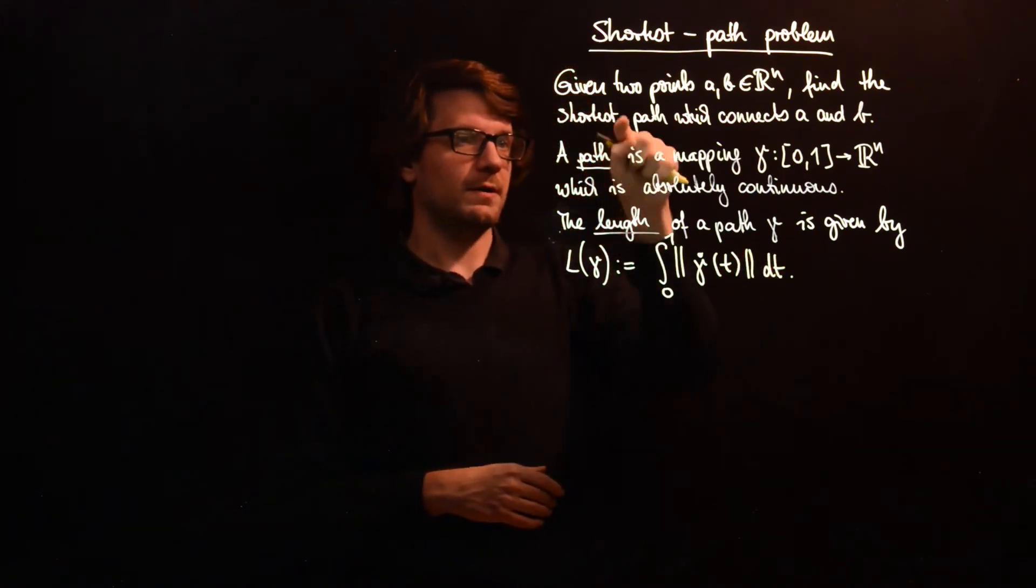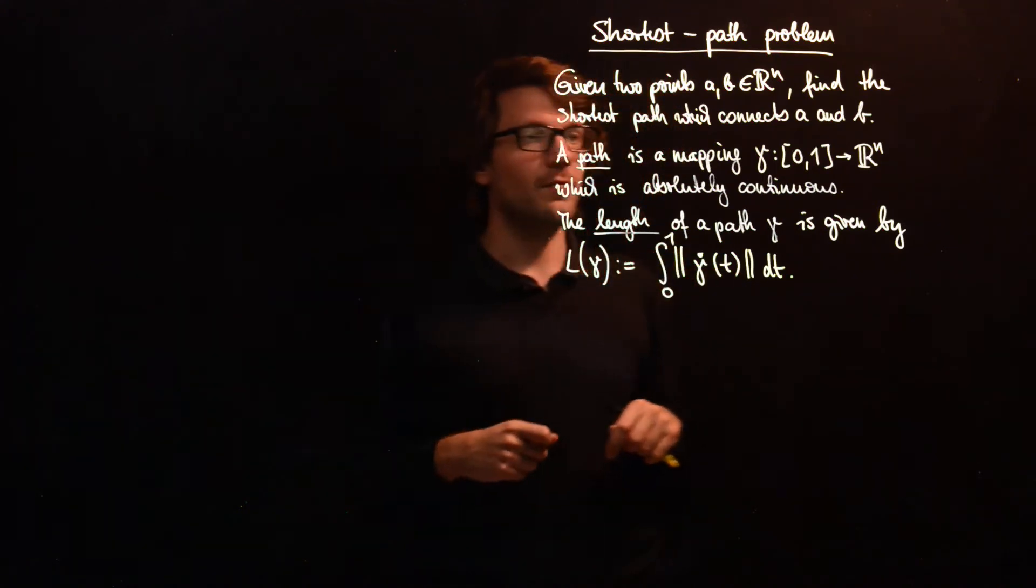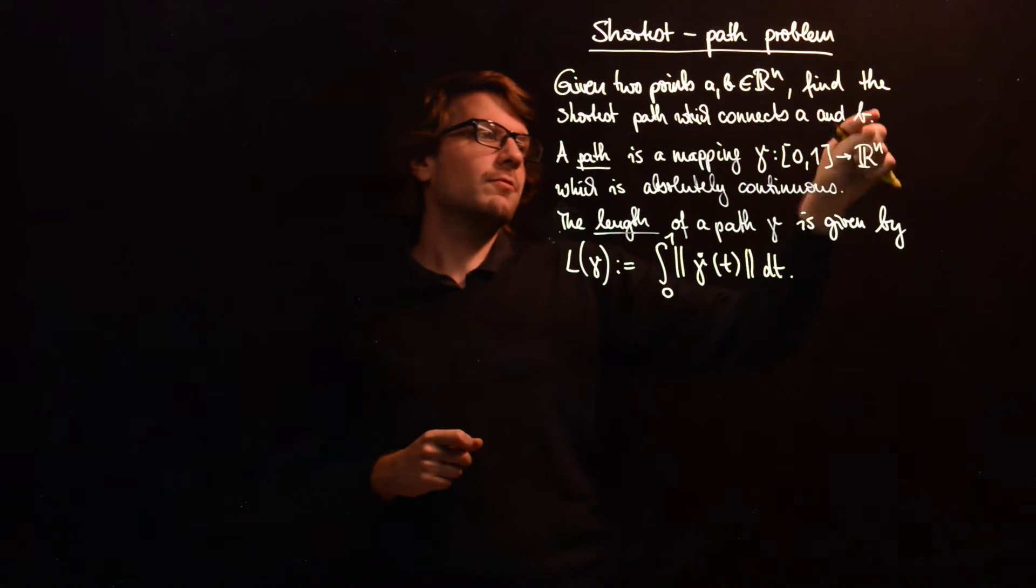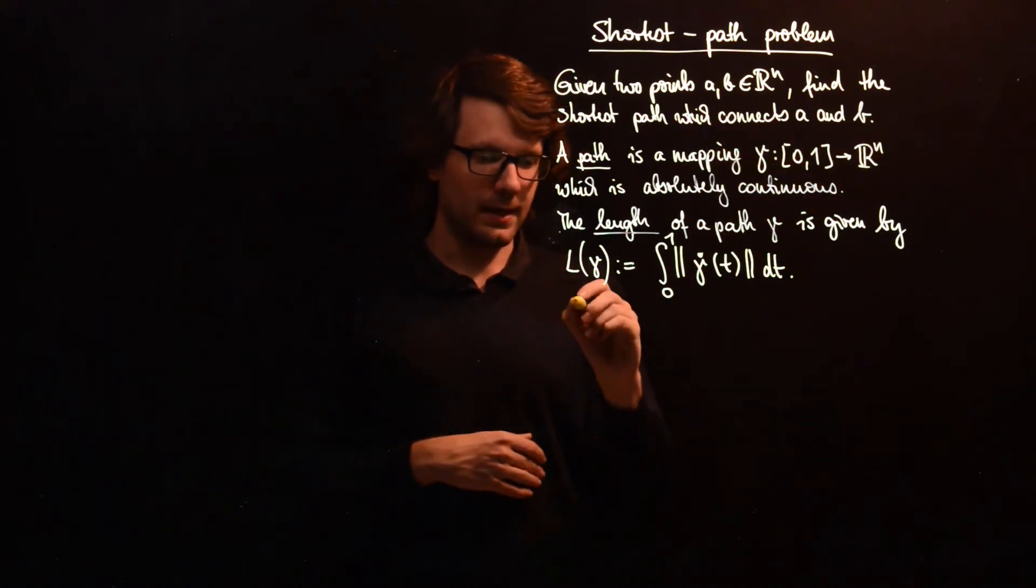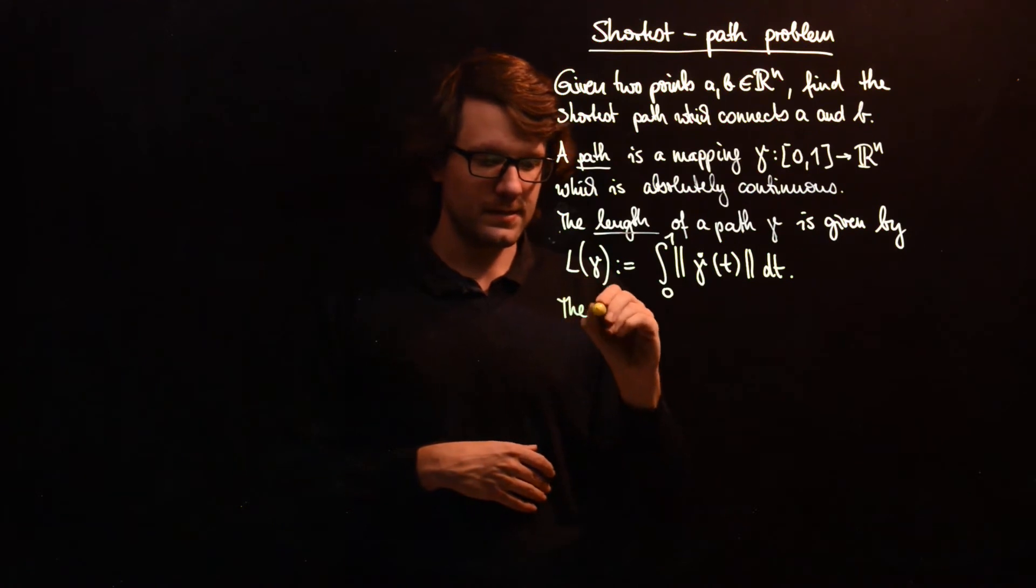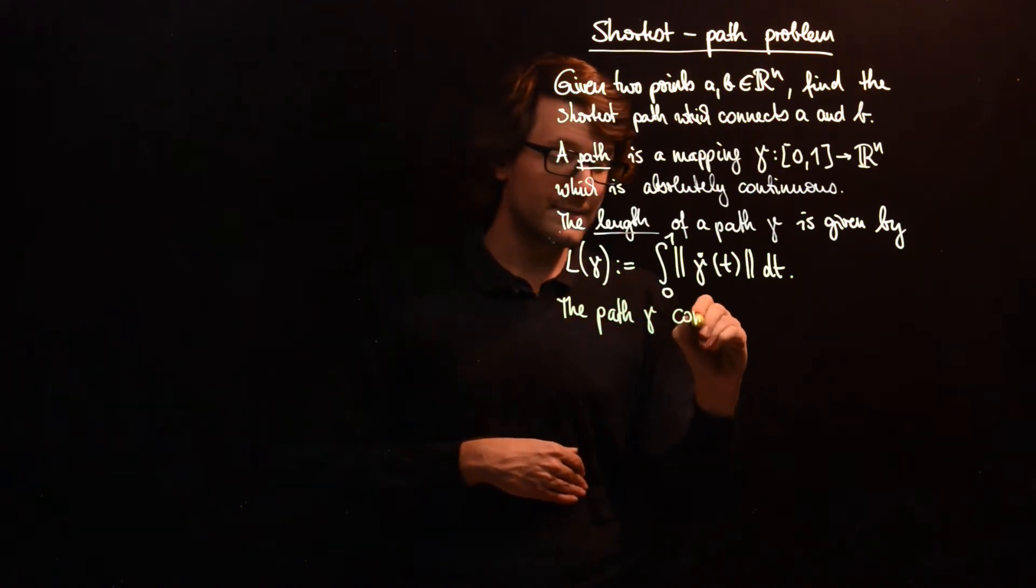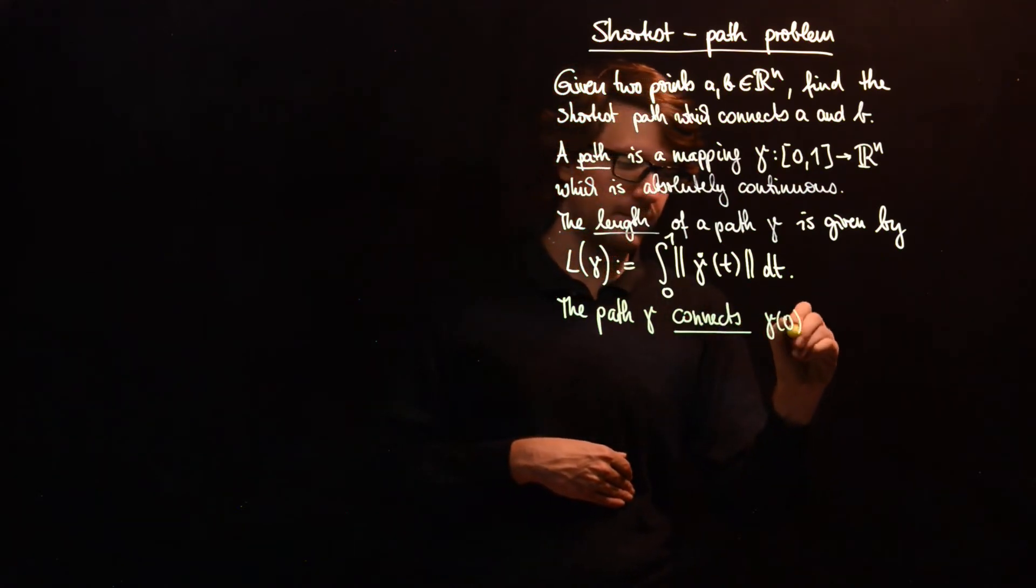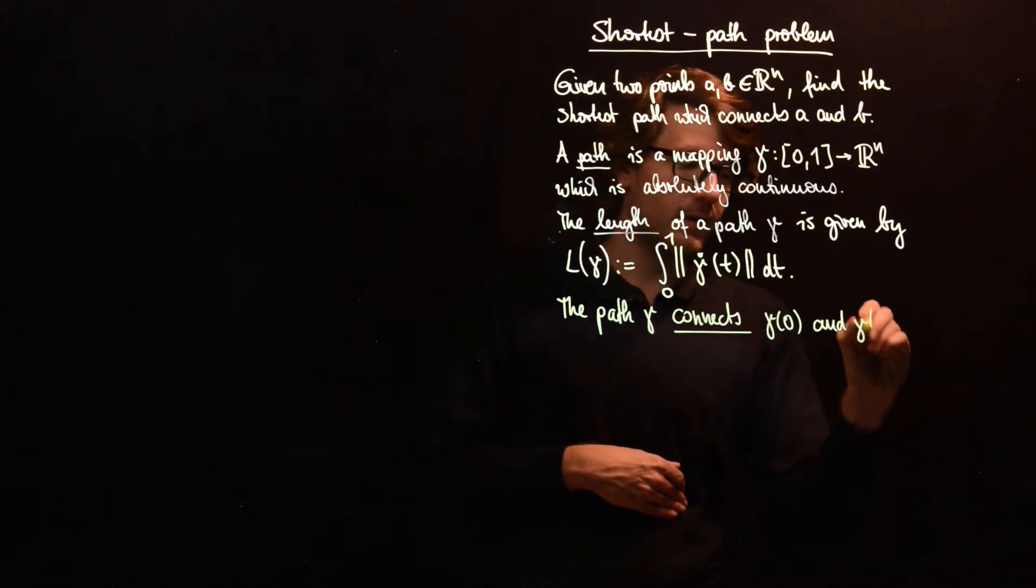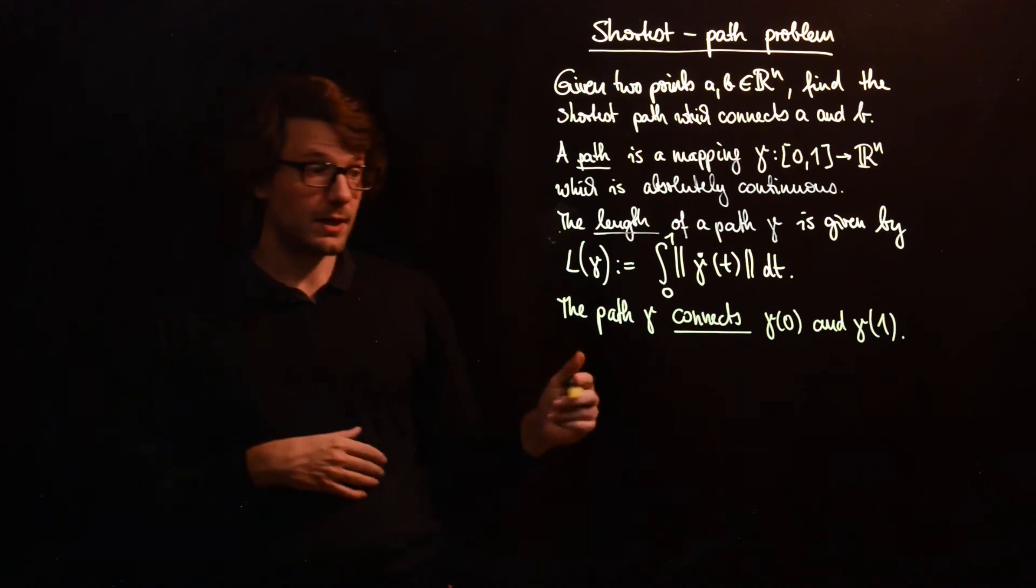Now we have to define this, so we want to minimize the length of the path, and now we have to define what it means to connect A and B. And we can write this as: the path gamma connects gamma 0, so the starting point, and gamma of 1, the end point.